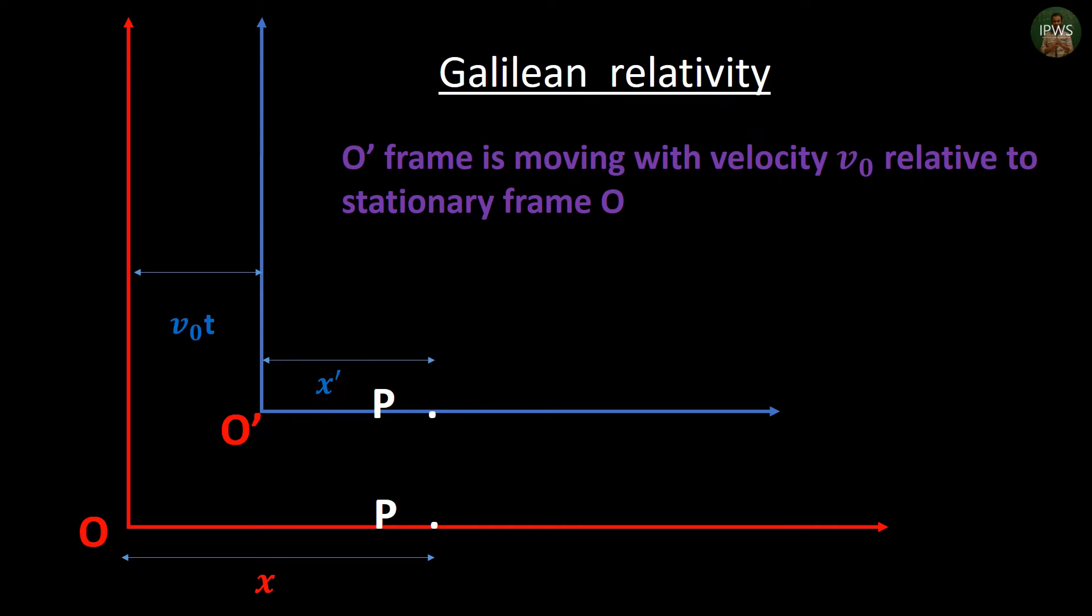An observer when moving in a constant velocity does not necessarily see the same thing as a stationary observer because of his relative movement. Their relation is known as Galilean relativity.